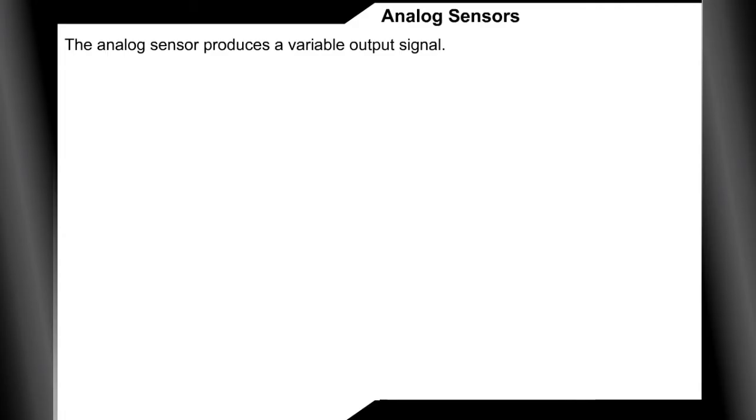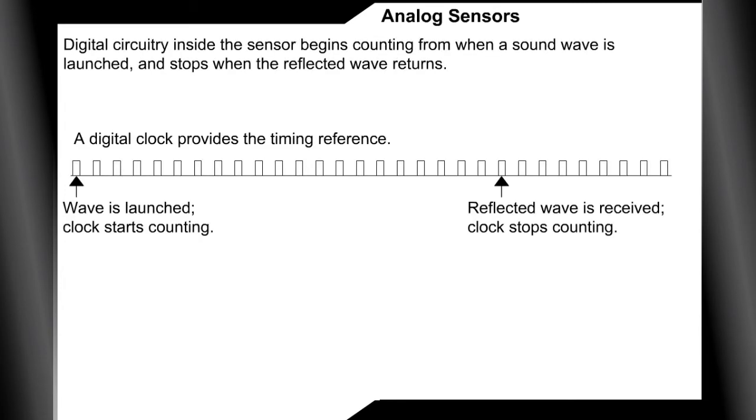Analog sensors. The analog sensor produces a variable output signal. Digital circuitry inside the sensor begins counting from when a sound wave is launched and stops when the reflected wave returns.